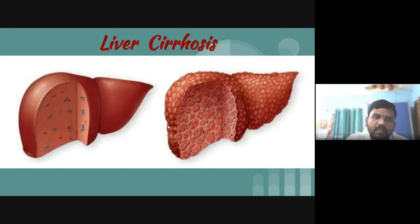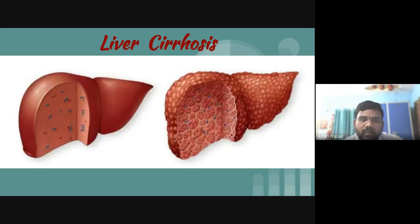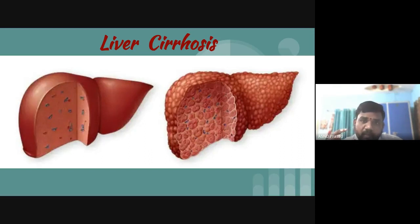To explain with a simple example: imagine you are using a sponge. In construction work, we use cement and plaster. If you dip a sponge in water, the heart of the sponge becomes soft and it won't be functioning properly. That is similar to what happens in a liver with cirrhosis.